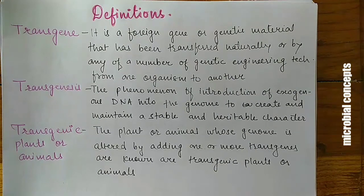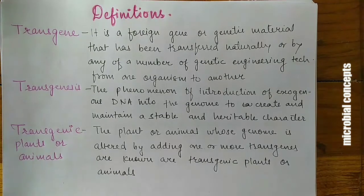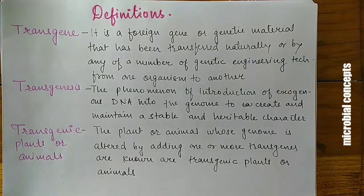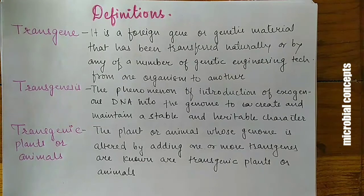The second term is transgenesis — the phenomenon of introduction of exogenous DNA into a genome to create and maintain a stable and heritable character. The next term is transgenic plants or animals: a plant or animal whose genome is altered by adding one or more transgenes.